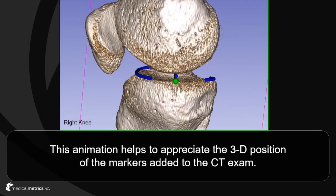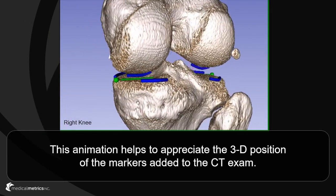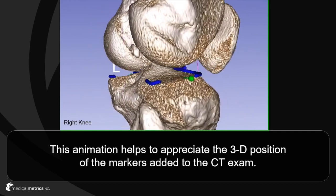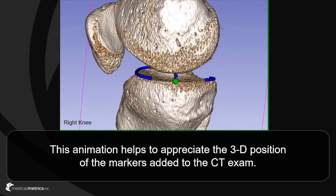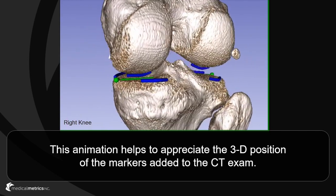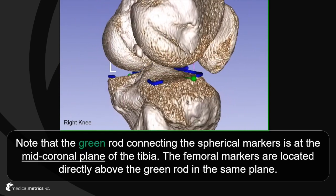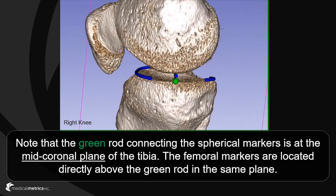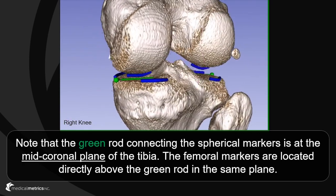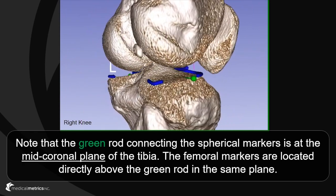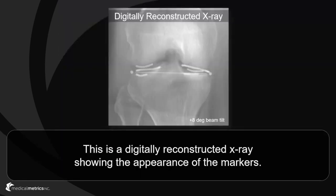This animation helps to appreciate the 3D position of the markers that were added to the CT exam. In the digitally reconstructed radiographs, note that the green rod connecting the spherical markers is at the mid-coronal plane of the tibia, and the femoral markers are located directly above the green rod. This is a digitally reconstructed radiograph with 8 degrees of vertical beam tilt, showing the appearance of the markers.